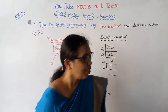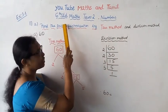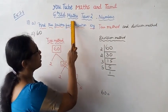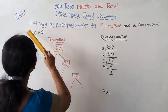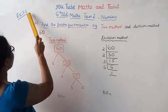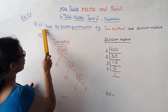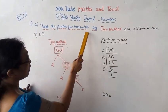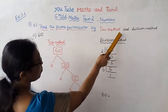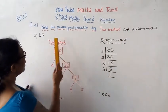Hello students, welcome to Max and Taman channel. This is exercise 1.1, Max Taman, 2 numbers, 11th level A's. Find the prime factorization by tree method and division method.